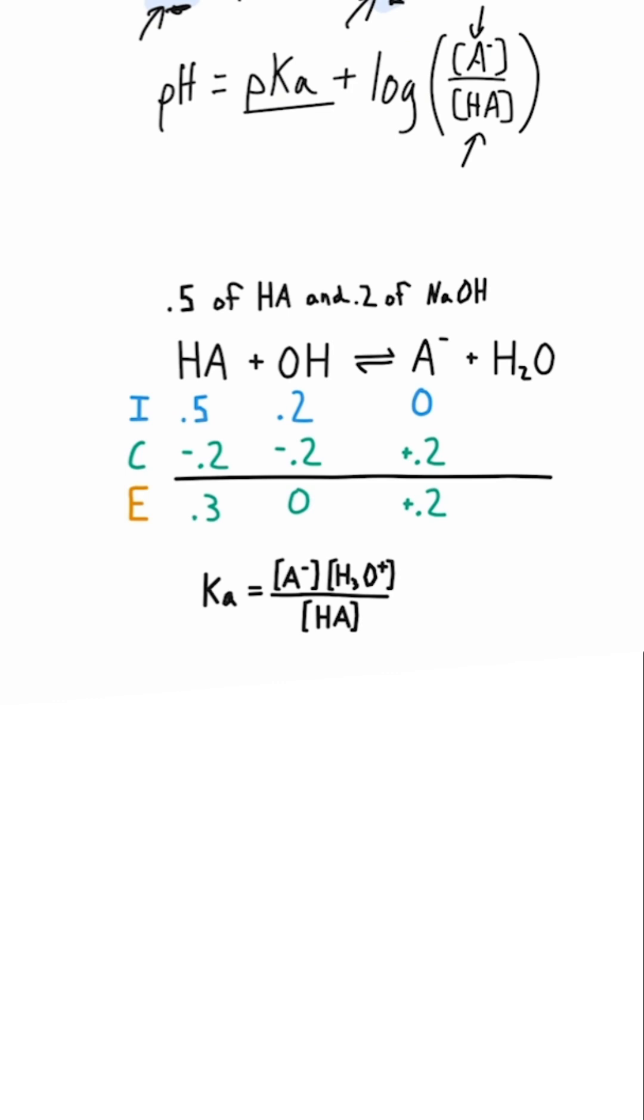The last situation occurs during titrations. This is when you start off with a weak acid, and then you add a strong base to solution. The reaction that takes place is HA with OH. However much OH is added, since it's a strong base, it's going to completely react with the acid.